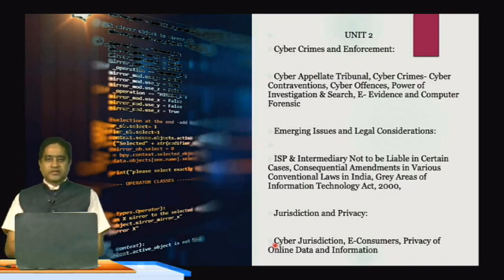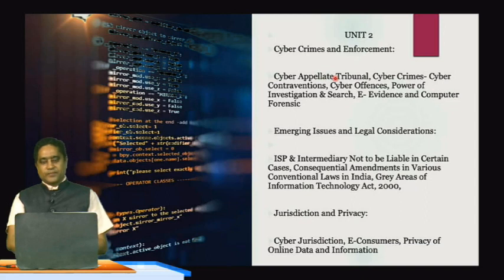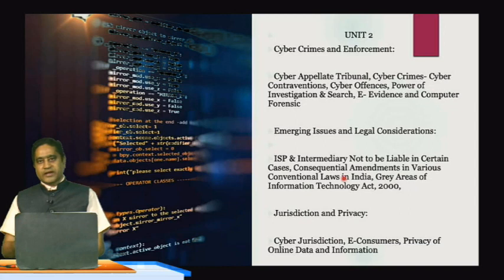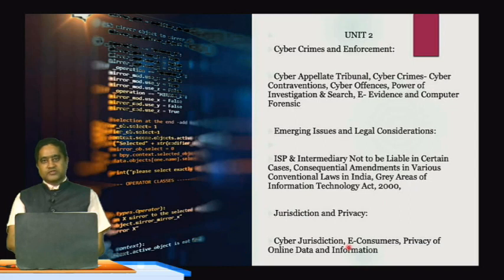Coming to Unit 2, the second unit covers understanding of cyber crimes and enforcement mechanisms. The Cyber Appellate Tribunal, where cases can be appealed, cyber offenses, contraventions, and the power of investigation and search are also covered. Key evidence and computer forensics — which is the latest trend — along with emerging issues and legal considerations, including ISP intermediary liability, consequential amendments, grey areas of the IT Act 2000/2005, jurisdiction and privacy issues, and privacy of online data and information.